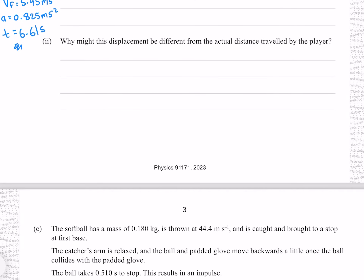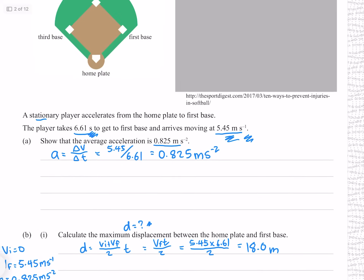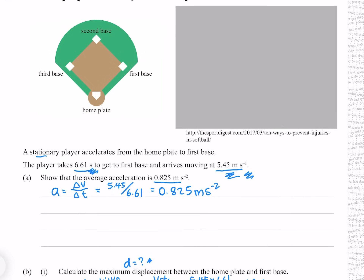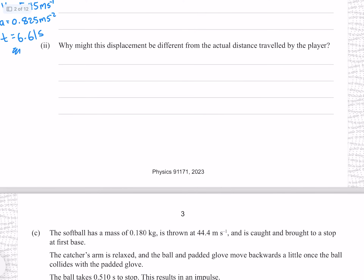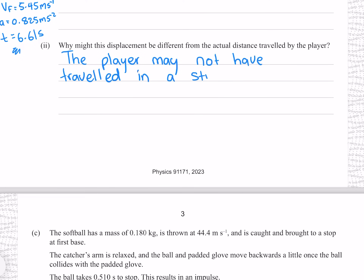Why might this displacement be different from the actual distance traveled by the player? We've assumed the player goes in a straight line from home plate to first base, when in reality they might have taken a longer path. The player may not have traveled in a straight line.